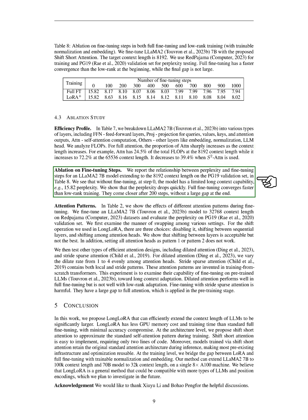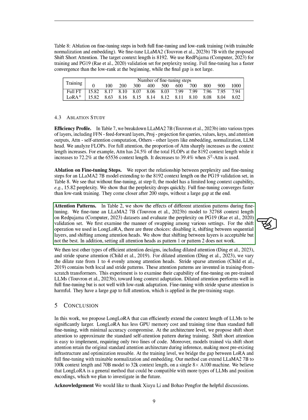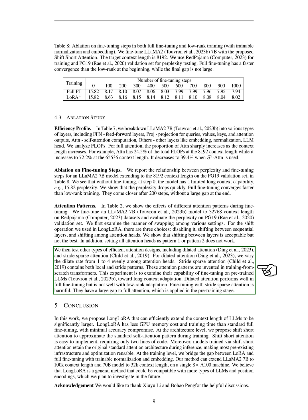We examined the relationship between perplexity and fine-tuning steps when extending to a context length of 8,192 on the PG-19 validation set. Without fine-tuning, the model had limited long-context capability with a perplexity of 15.82. Perplexity dropped quickly with fine-tuning; full fine-tuning converged faster than low-rank training, but the two methods were similar after 200 steps. We also tested different attention patterns during fine-tuning at 32,768 context length. Shifting between layers was acceptable but not the best; setting all heads as pattern 1 or pattern 2 was not effective. Dilated performed well in full fine-tuning but not with low-rank adaptation, and fine-tuning with stride sparse was harmful, as these patterns had a large gap to full attention used in pre-training.